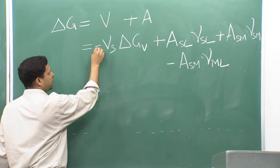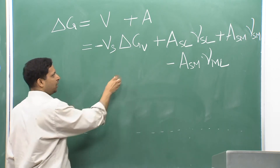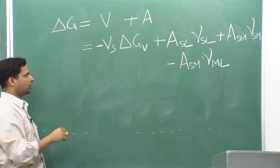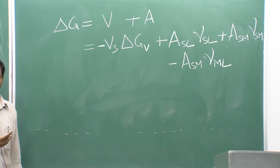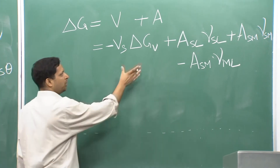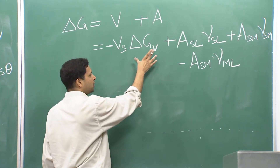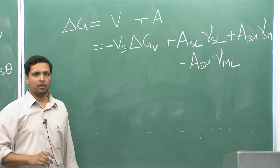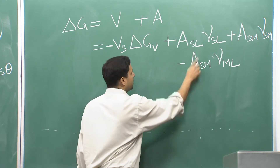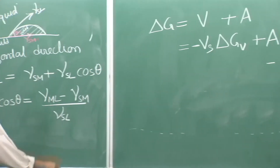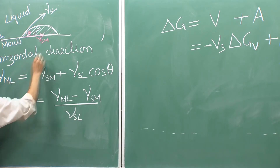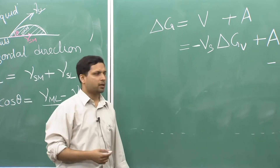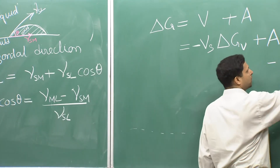We have added a negative sign — although ΔG_V itself should be a negative quantity, to make the mathematics simpler we treat it as positive and add the negative sign, so the overall quantity remains negative. A_SL is the area of the solid-liquid surface, which is newly created, and its energy contribution is A_SL × γ_SL.